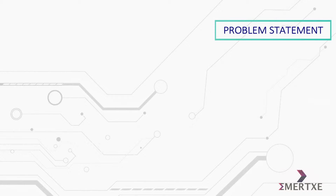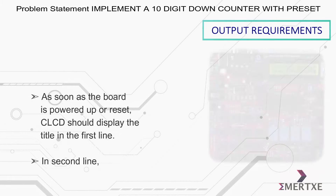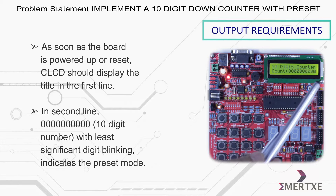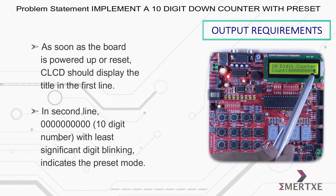In this assignment, you have to implement a 10-digit down counter with preset. As soon as the board is powered up or reset, the LCD should display the title in the first line. In the second line, 10 zeros with the least significant digit blinking indicates the preset mode.